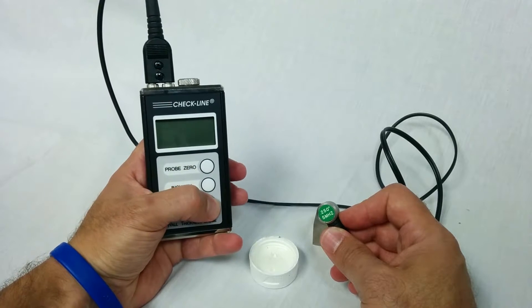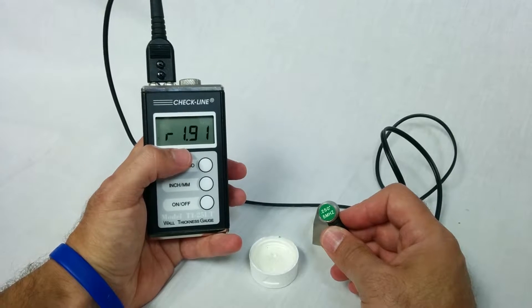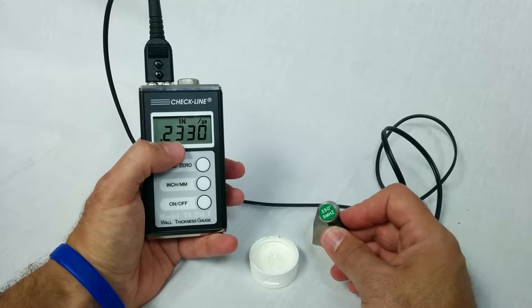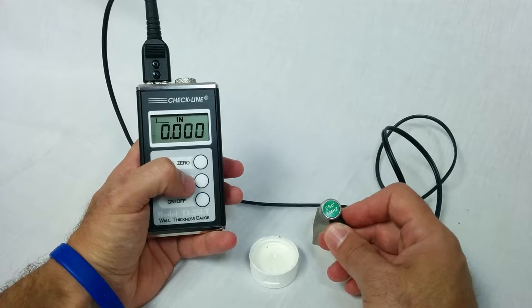First step is I'm going to turn the gauge on. I'm going to boot stop. It's going to show you it's programmed for steel and show you the velocity. Then it's going to display zero.